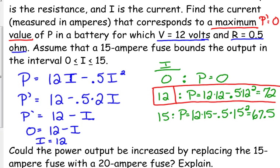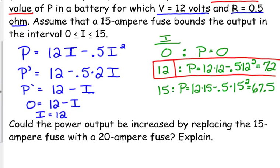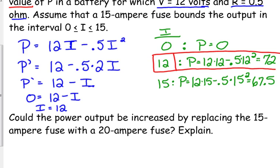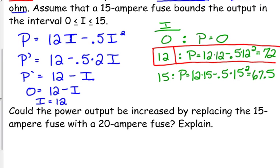Now there's a second part to this question. It says, could the power output be increased by replacing the 15 amp fuse with a 20 amp fuse? So the only thing that changes are the bounds of our domain. The 15 amp fuse prevented the current from being more than 15.